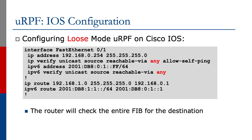If we look at the loose mode configuration as shown in the slide, you will see that the configuration has changed slightly. The 'reachable-via' is now set to 'any'. This means that the router will check the entire FIB for the destination, meaning we have a successful test so long as the subnet is somewhere in the router's FIB.